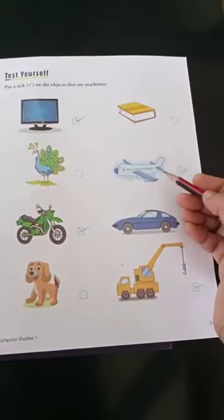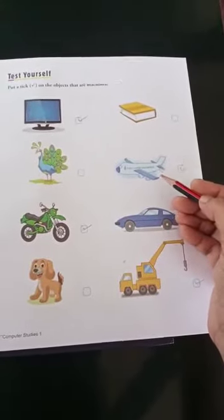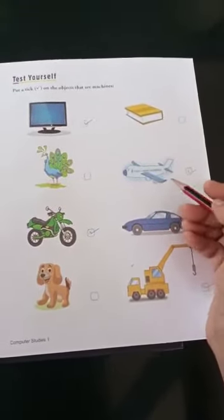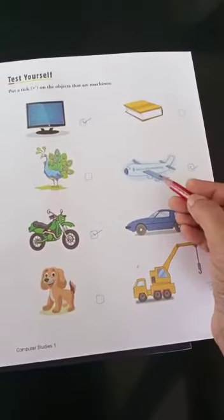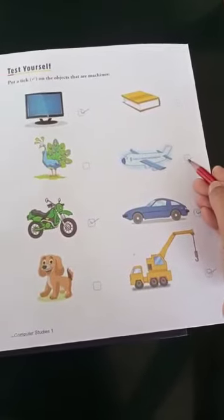Next one, what is this children? An aeroplane. Have you seen an aeroplane? Yes. So this is a machine? So this is also a machine. Put a tick mark here.